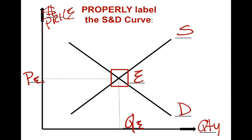Let's go through an example where we're given a market demand schedule and a market supply schedule for soda. A market demand schedule shows how much of a good the market will buy at various different prices, and the market supply schedule shows how much firms will be willing and able to sell at various different prices. In this case, we're talking about soda.